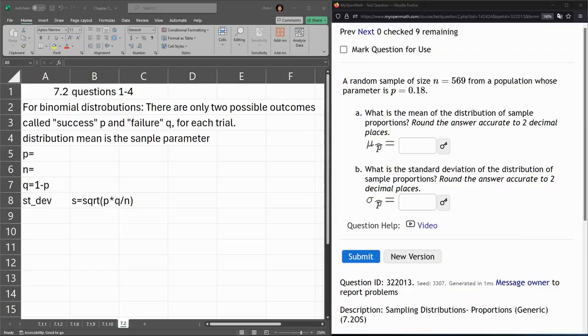These first questions in 7.2, all we need is a little bit of vocabulary here. We have a binomial distribution happening, so it's either success or failure.